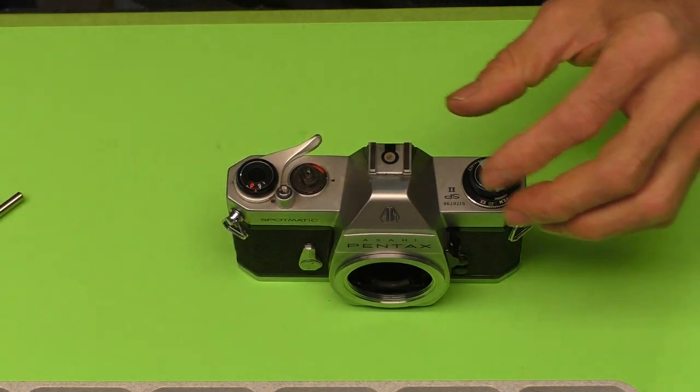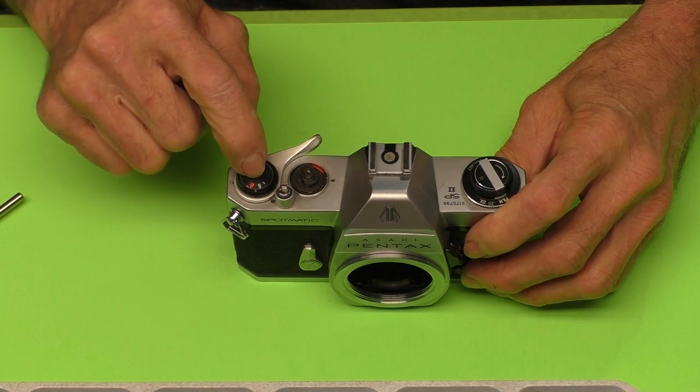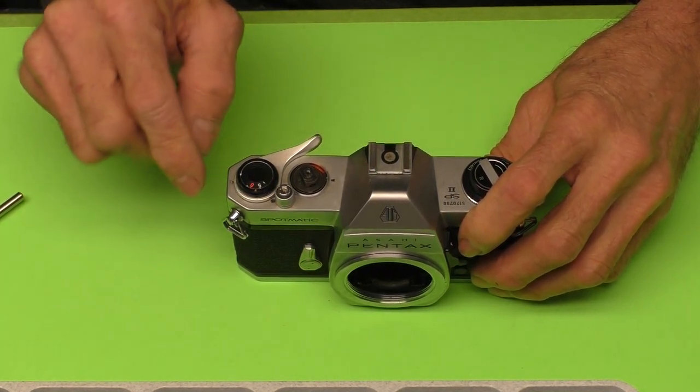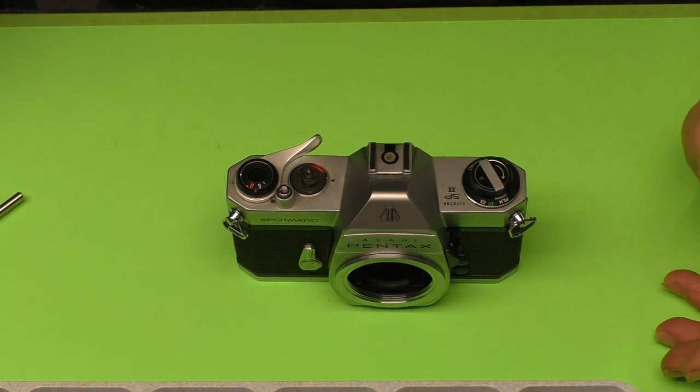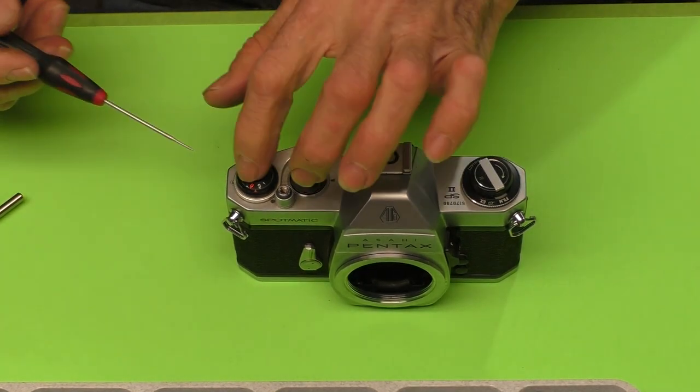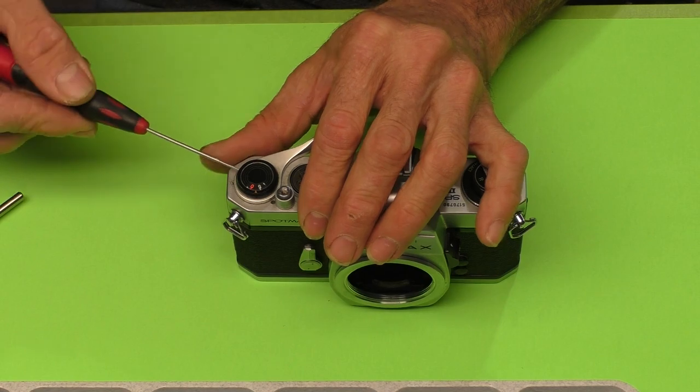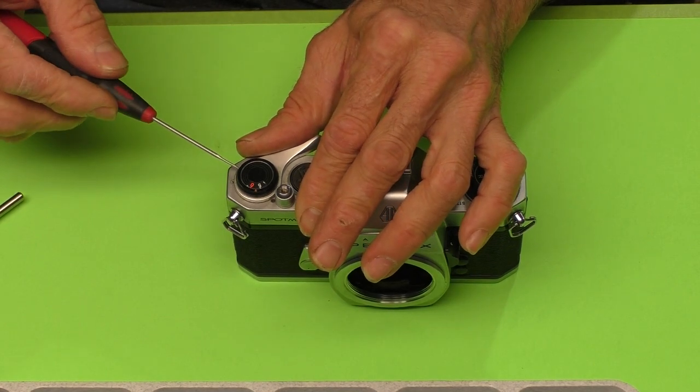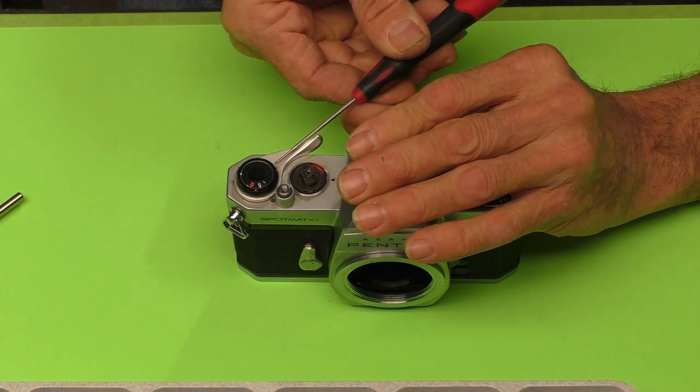Next, there are three set screws on the film counter dial. They're located roughly 30-some degrees apart. They're a little bit offset different because it's indexed to a certain position. So, these don't have to come out. They just get unscrewed partway. I learned this in a few videos ago when I was working on that K1000.